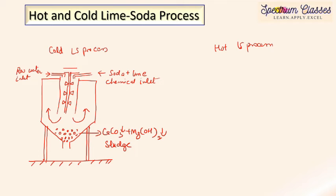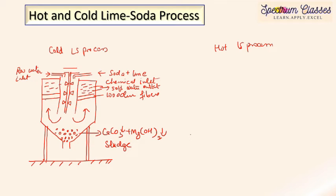The sludge consisting of CaCO₃ and Mg(OH)₂ is suspended in the chamber. Wooden fibers are used for filtering in this cold process. Soft water is collected at the outlet after filtration. This describes the basic setup of the cold lime soda process, with a soft water outlet at the top of the assembly.